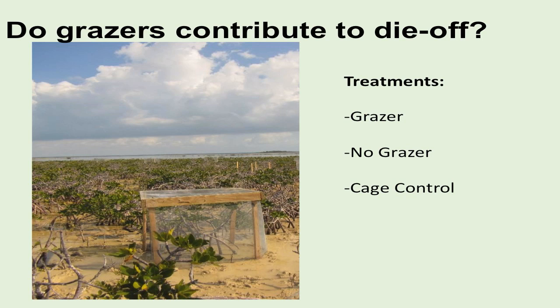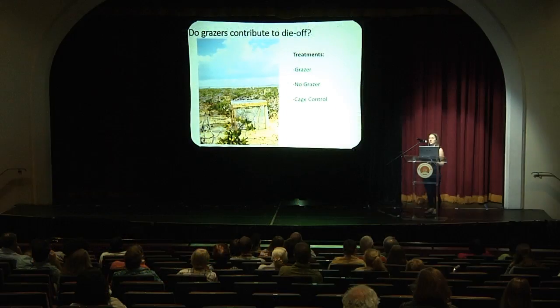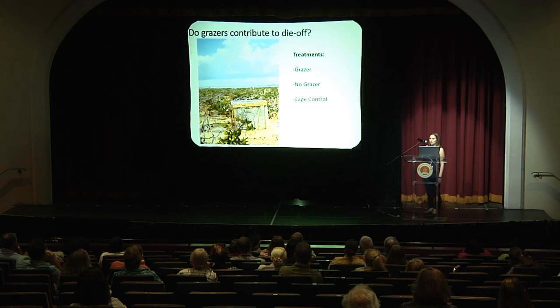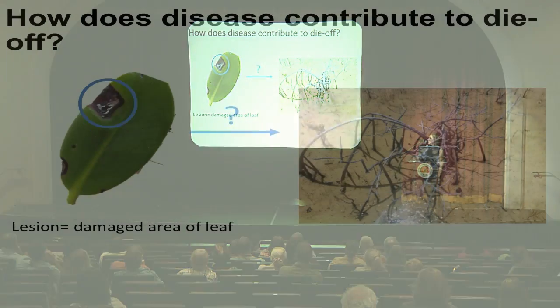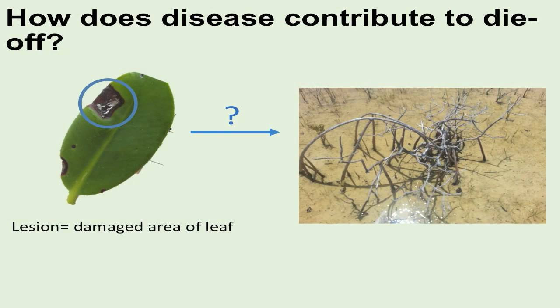Our preliminary results show that there is a decreased amount of grazing in the cages, but it doesn't seem super significant. So that suggests to us that grazers are there, but they're obviously not the main cause of this die-off.